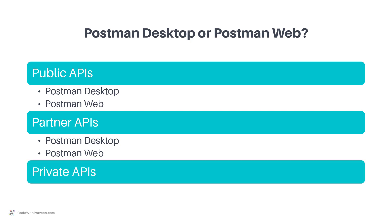Finally, when it comes to Private APIs, most of the time these APIs are hosted only within your local network. In such cases, the best option is to go with the Postman desktop application. As you have seen, the Postman desktop application is the most common one and can be used across any of these scenarios. It doesn't matter where the API sits — it can be only within your local network or spread across the internet — you can still use it.